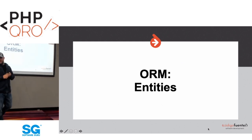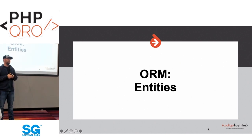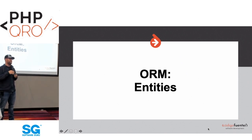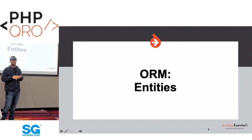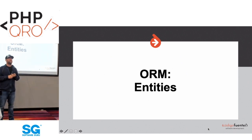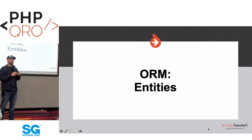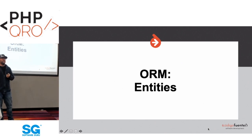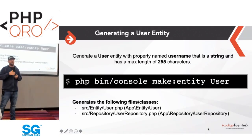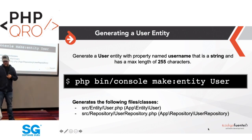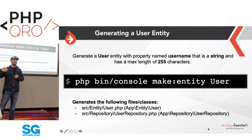Now that we've seen how to insert and read data using arrays with no PHP objects, in most applications it's more complicated. You need a way to isolate functionality, write methods around your data, and pass objects around to perform functions. The first thing we'll do is create an entity for the user table using the Maker Bundle, which generates the entity classes needed to upgrade our controller to utilize the ORM.